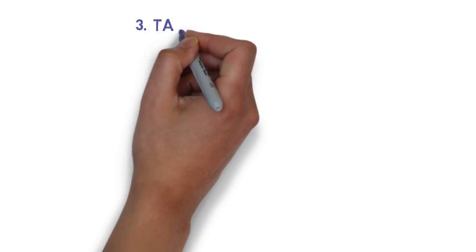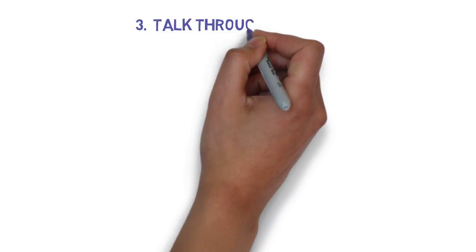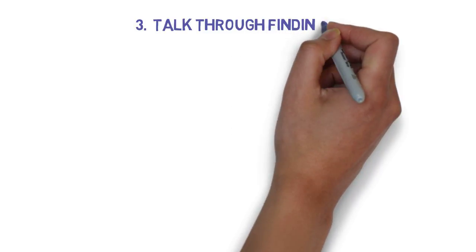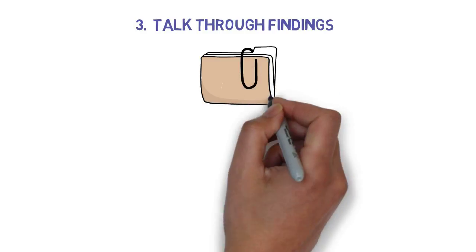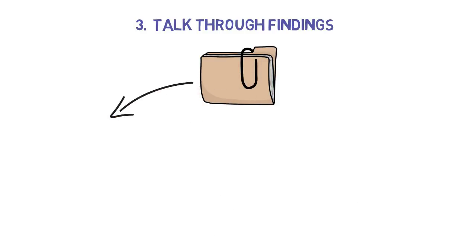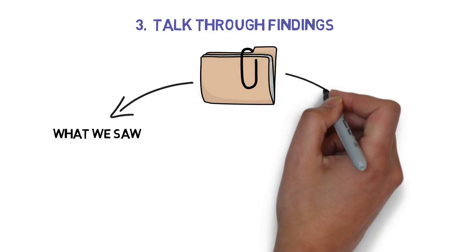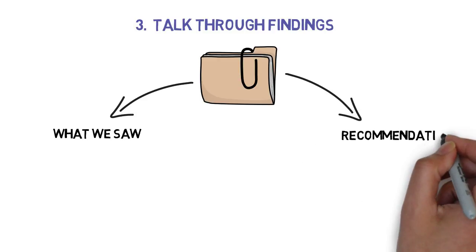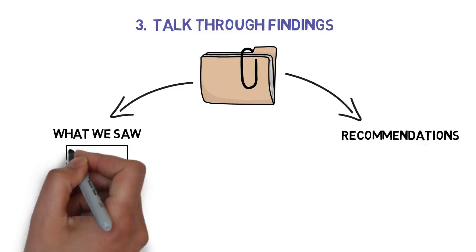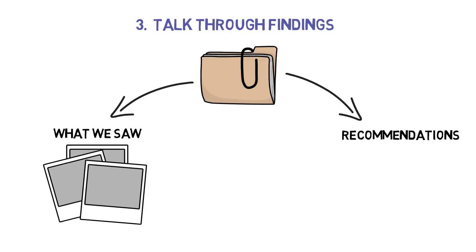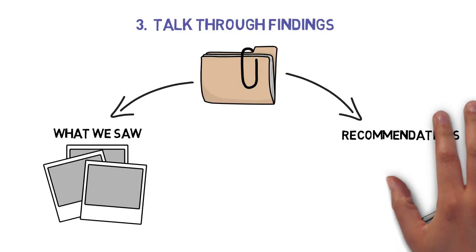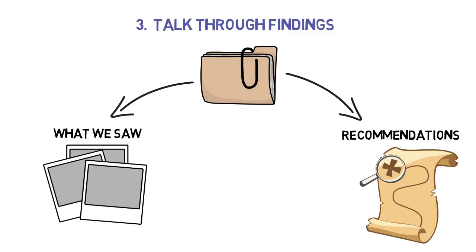Part three: we return to your school with all of the evidence we have collected and present a summary report. We talk through our findings in person, explaining what we saw and our recommendations for how to address these issues. Because although it's important we leave a snapshot about how the school manages behaviour now, it's more important that we leave a roadmap for the future — how to make things even better.